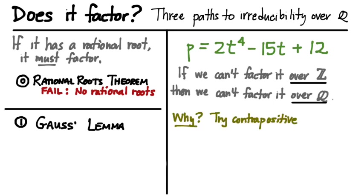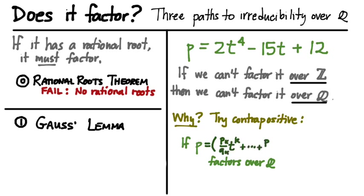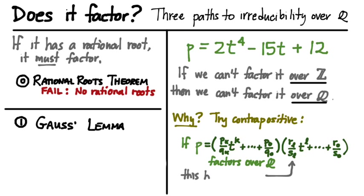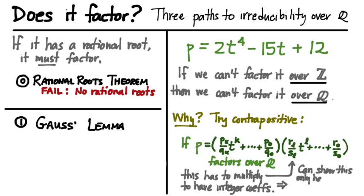The idea for why Gauss's Lemma works: let's think about what the contrapositive might be. If I could somehow factor the polynomial p over the rationals, then each of those factors would be polynomials with rational coefficients — p's over q's, r's over s's, where all are integers. But in that situation, we can actually show that if we can factor it with these rational coefficients, then when we multiply it back out it has integer coefficients — 2, negative 15, and 12 in this example — and it must have factored over the integers in the first place.